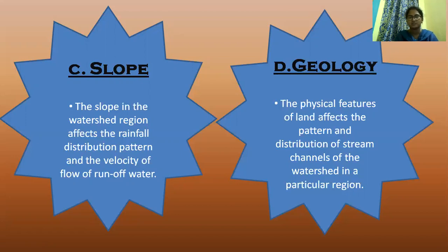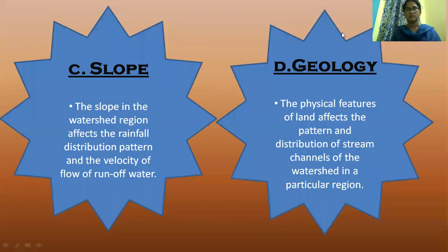Next is Geology. The physical features of land affect the pattern and distribution of stream channels of the watershed in a particular region. The attitude and steepness of hills affect the speed of water flow. Fast-flowing water erodes soil, sand, gravel, boulder, and debris. The geology of a region affects the direction and movement of water, shape of the watershed, water quality, and biological productivity. Physical structures of rocks such as fractures, pools, and falls allow water to flow within the watershed ecosystem.